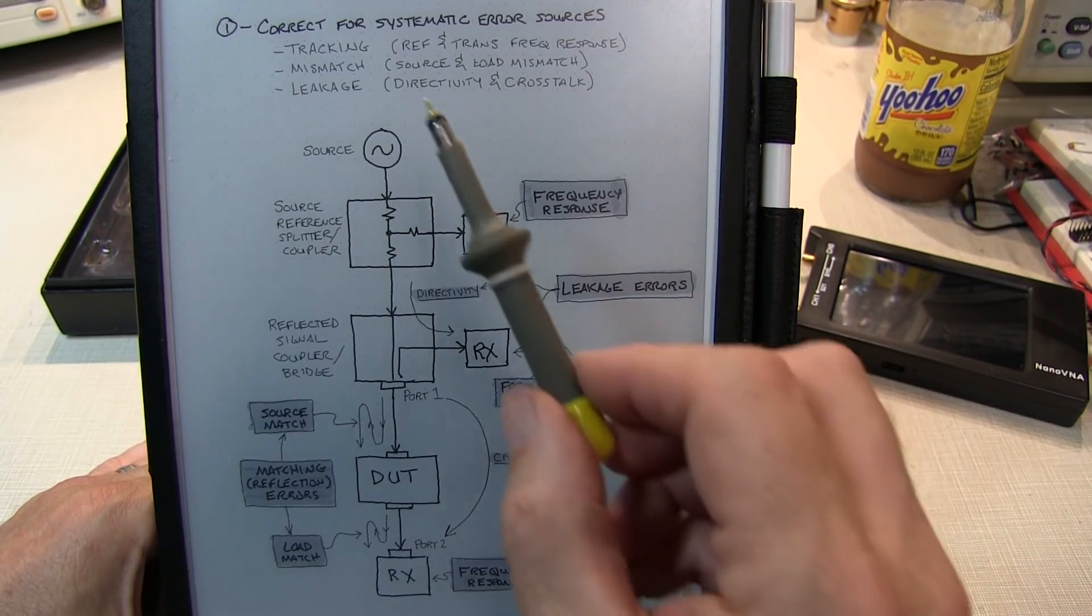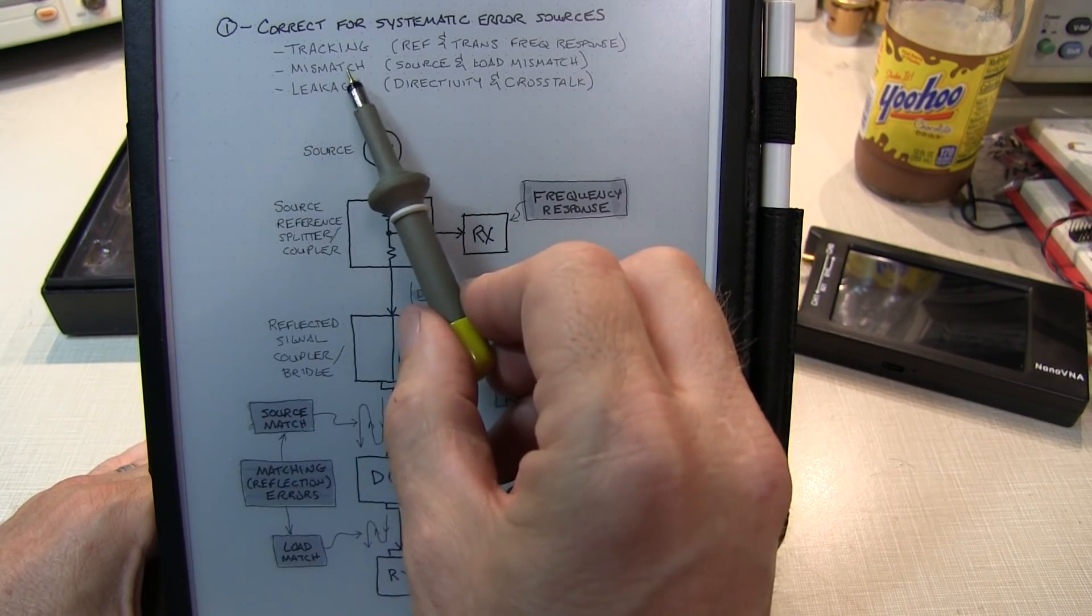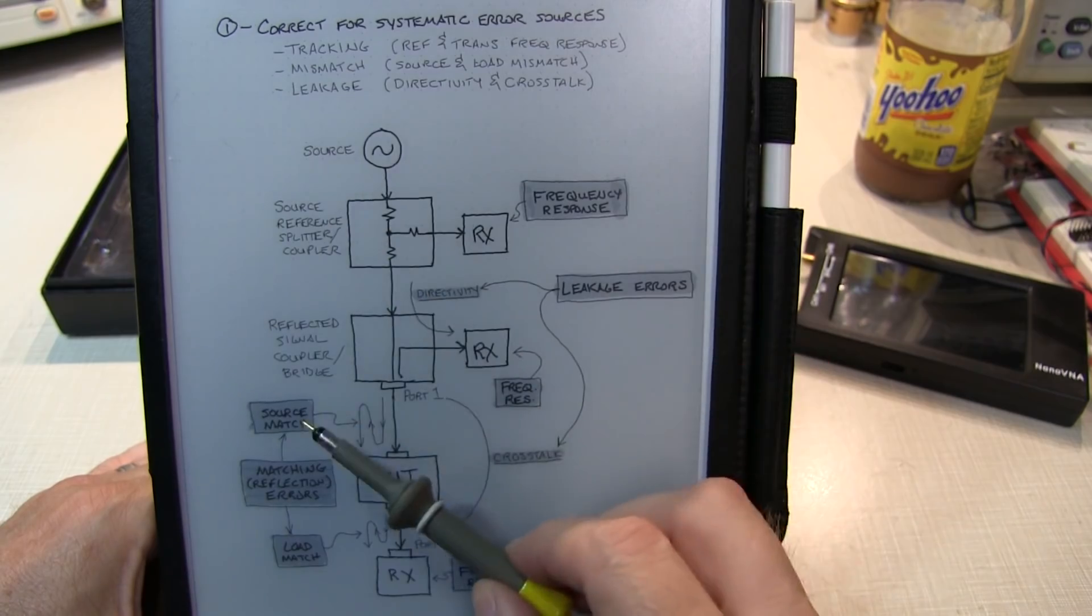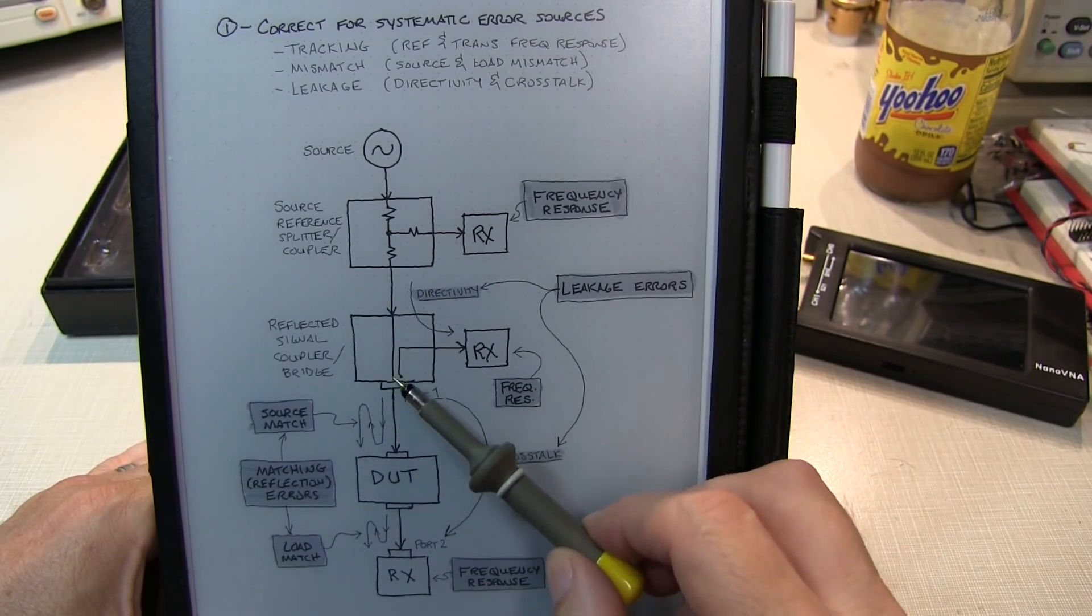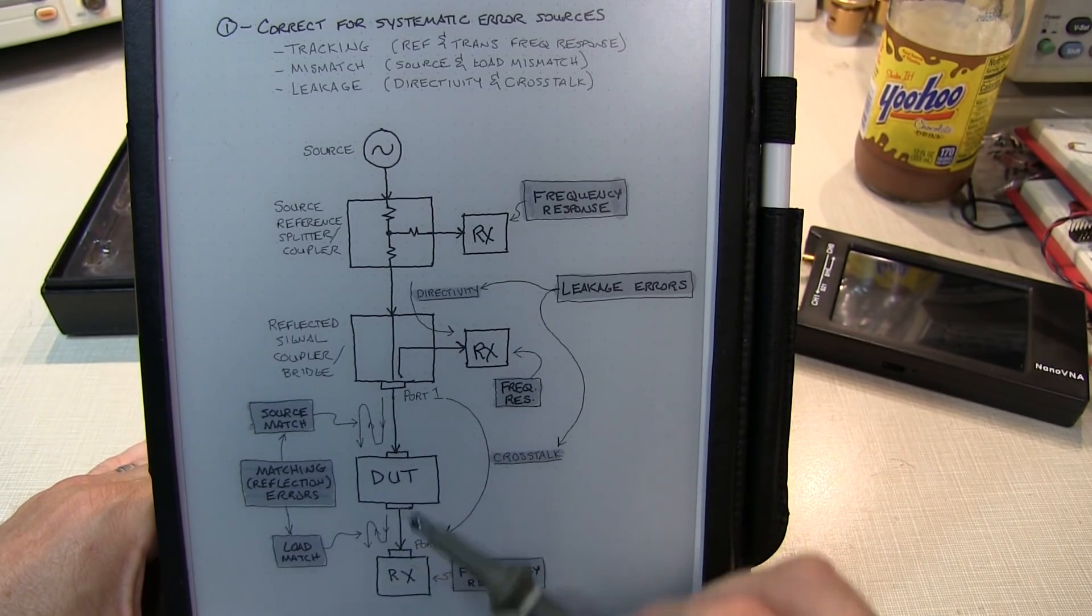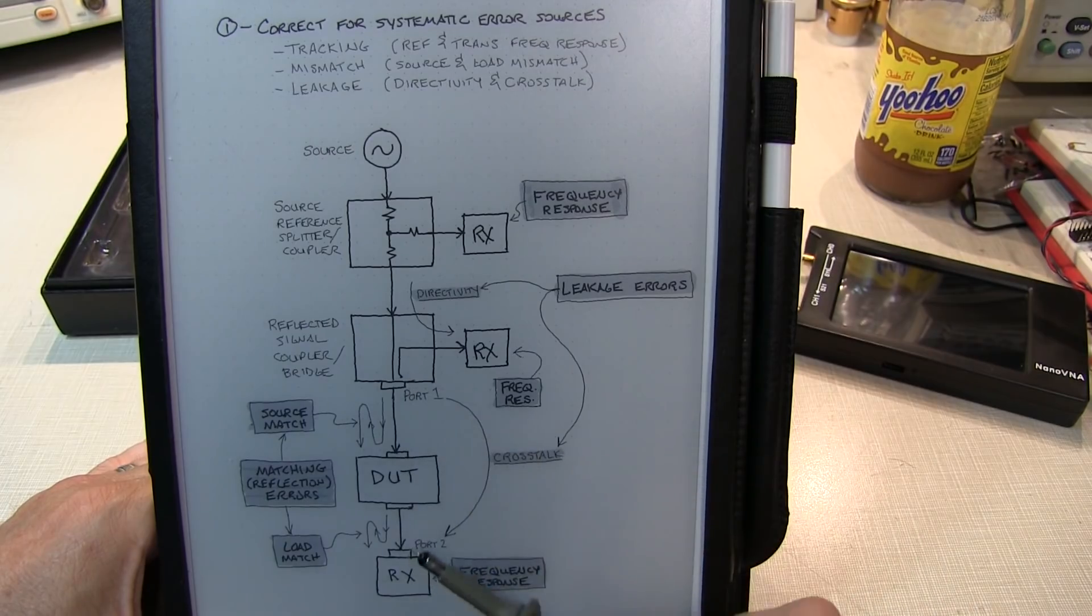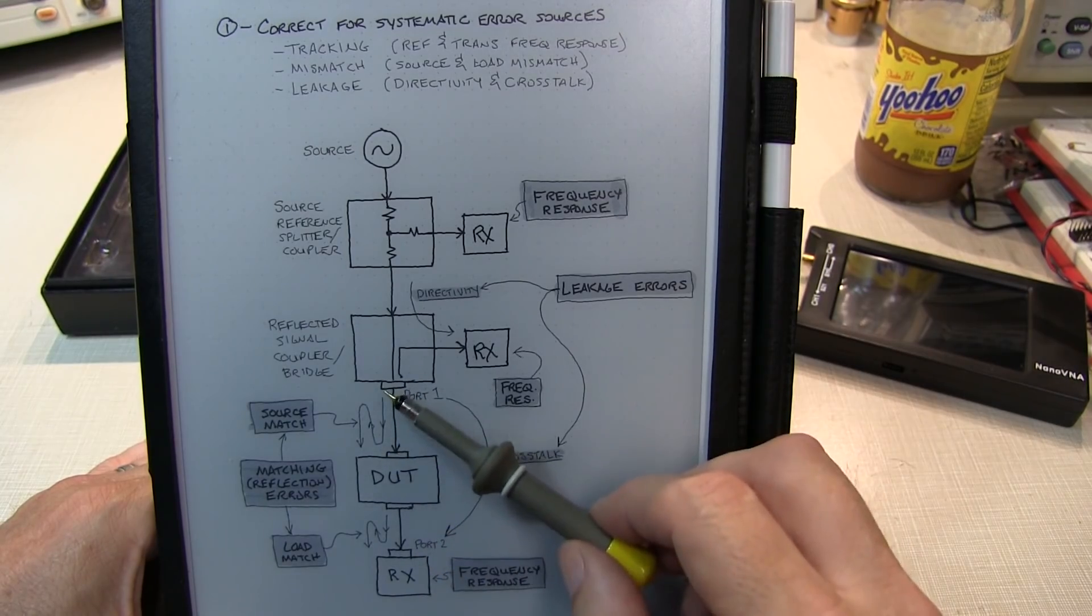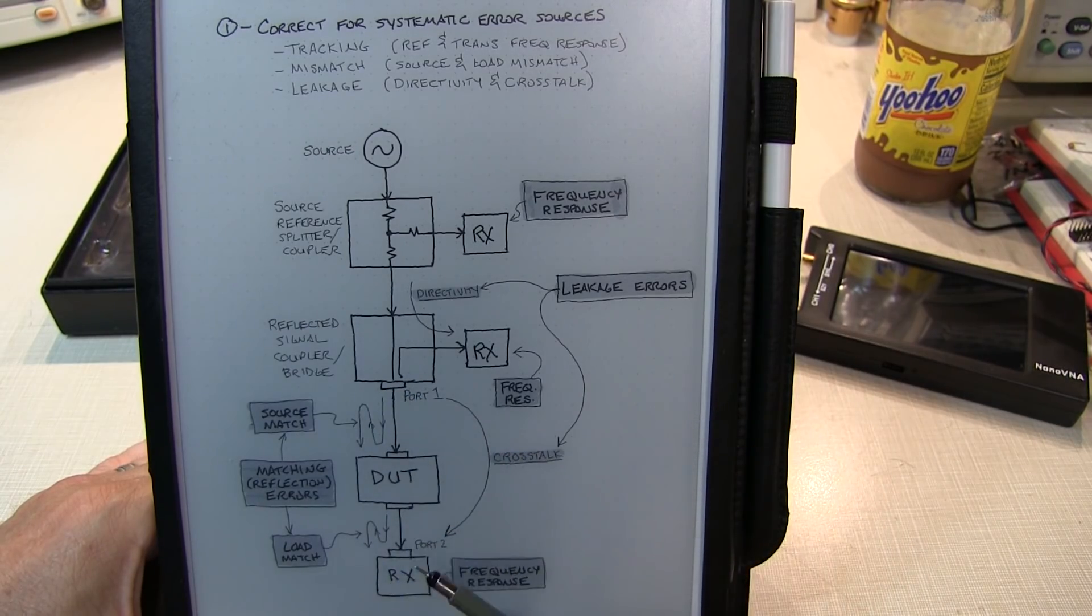Now the next class of errors to correct for are mismatch errors or matching errors called the source match and load match. And that has to do with the impedance matching at the ports of the VNA that will cause reflected energy to then bounce back towards the DUT and vice versa. So we need to correct for those as well.